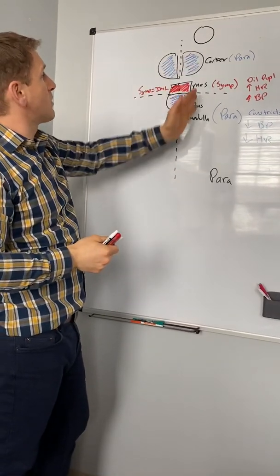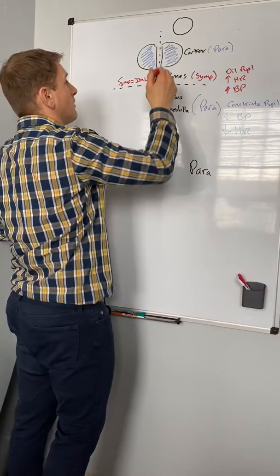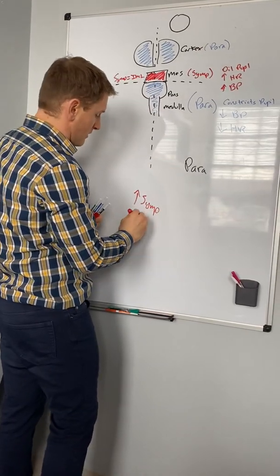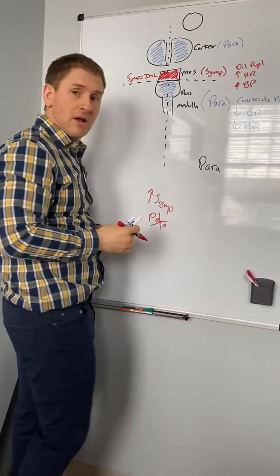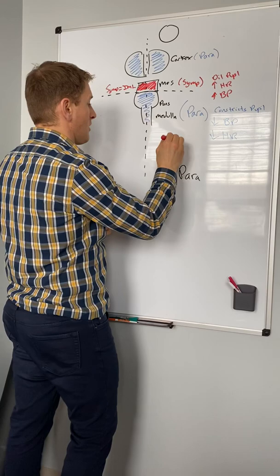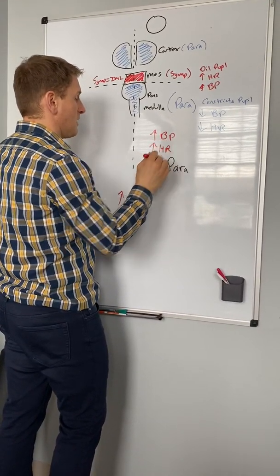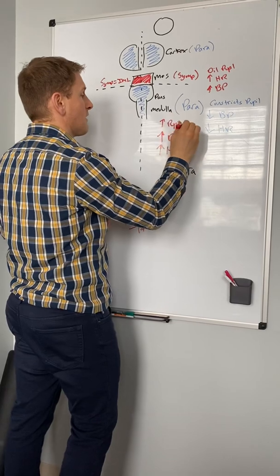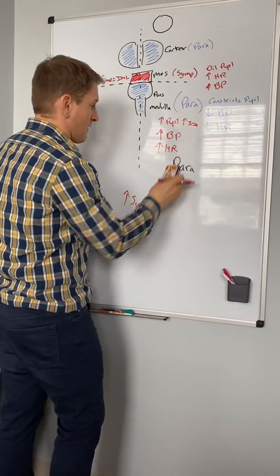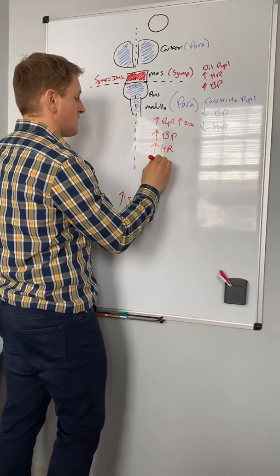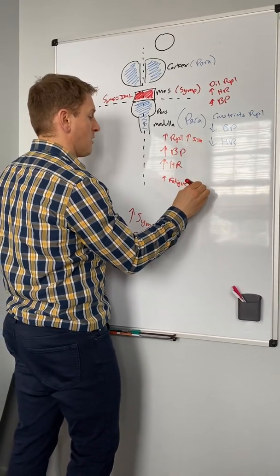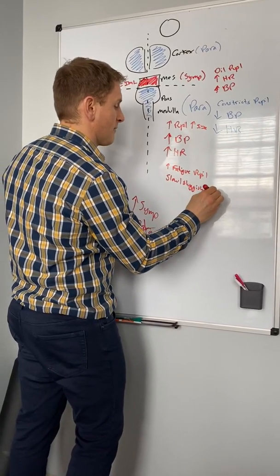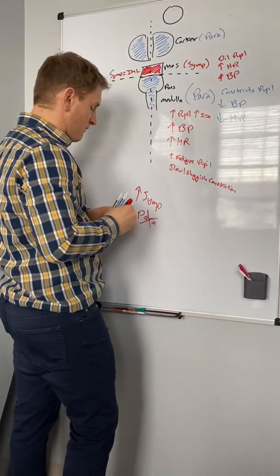If your sympathetics were increased on your left side — which corresponds to a big pupil — it means the parasympathetics are not working as well and we need to turn them back on. You would potentially have increased blood pressure on this side, increased heart rate, increased pupil size, increased fatigability of the pupil, and a slow or sluggish constriction.